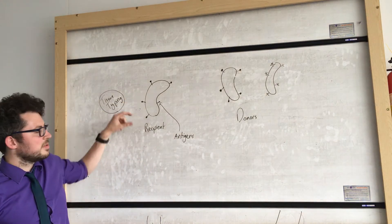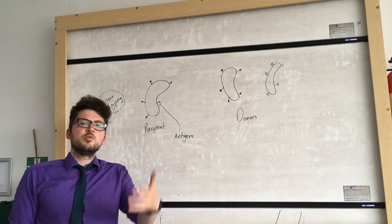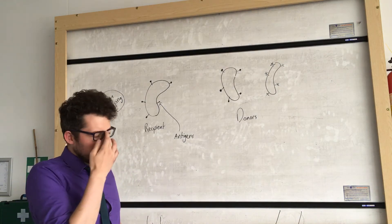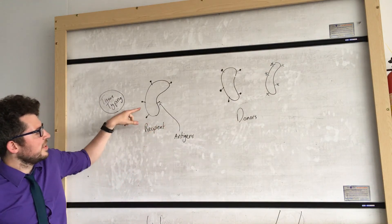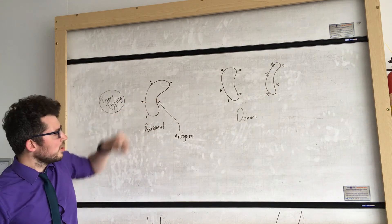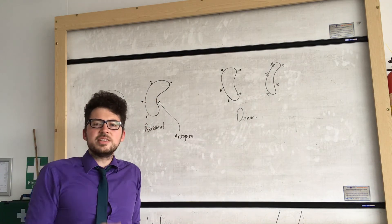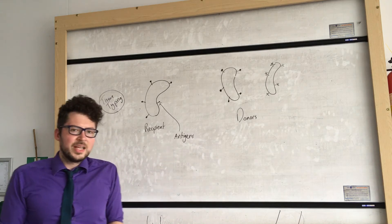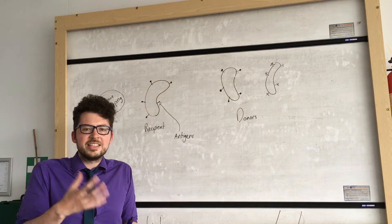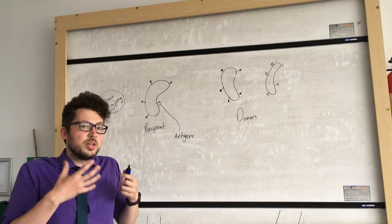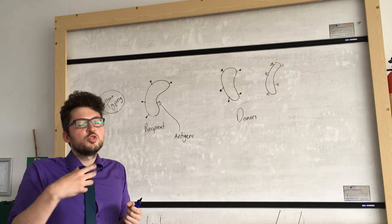So imagine this is our recipient's kidney. The recipient just means the person who is going to be receiving a donor kidney. And if you look on the surface of our kidney we can see these molecules. Now the surface of every cell in your body has a molecule called an antigen. This just means it's a molecule that displays to your body, displays to your own immune system that it is your cell.